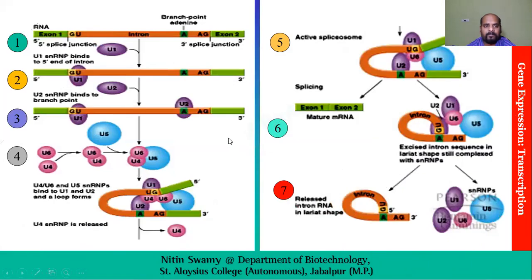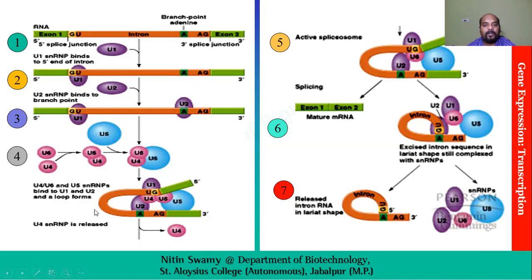U4 and U5 interact and then bind with U1 and U2, creating a loop, and U4 dissociates from the complex forming an active spliceosome. In this diagram, we have RNA with exon 1, a GU at the 5' splice site, then the intron, a branch point adenine, and AG at the 3' splice site — this is the splice junction. U1 binds to the 5' splice site, then U2 attaches to the branch point adenine. U4, U5, and U6 then join the complex and form a loop. When the loop forms, U4 is released and the spliceosome becomes active.